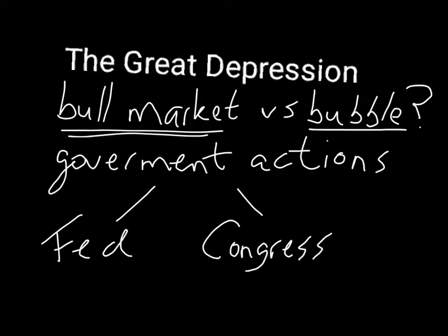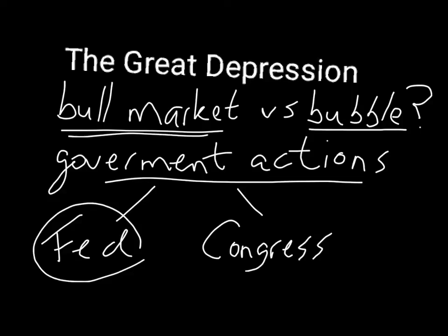In addition to the excess borrowing, the other thing that really increased the severity of the Great Depression were some government actions — first of all, by the Fed. The Fed decided to raise interest rates, and they really made the economic situation worse. They also did a few other things, but in general the Fed really didn't act responsibly at the time. Of course, maybe at the time they didn't know any better. The Fed has a little bit more knowledge now, but the Fed didn't help the situation and probably made the Great Depression worse than it otherwise would have been.